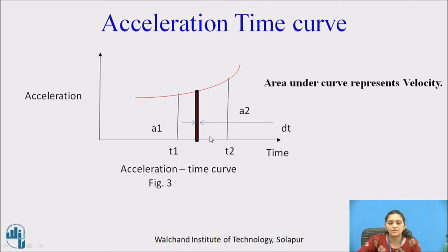Acceleration-time curve. The acceleration-time curve gives velocity, which is the area under the curve. That is, a into t is velocity.